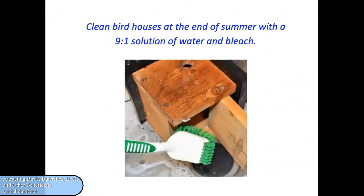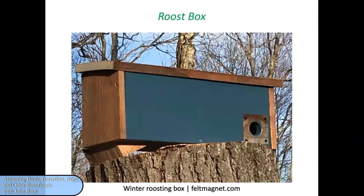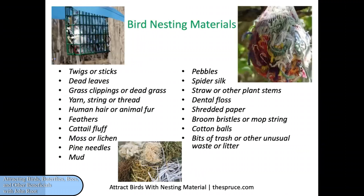Protect birdhouses from predators as shown in this slide. It's particularly important if you put a birdhouse on a tree trunk that you make sure predators are not able to access the eggs or chicks. Clean your birdhouse at the end of the summer with a nine-to-one solution of water and bleach — scrub it down well. Consider also offering a roost box over the winter to allow birds to find a place protected from the elements and also enable them to huddle next to each other. It can be fun to offer bird nesting materials in a suet feeder or a mesh bag. People often save hair from grooming their cat or dog and put it on a branch so the birds will find it. This is one of those activities that if you do it with children, they might be quite enthusiastic about watching when birds help themselves to these contents.